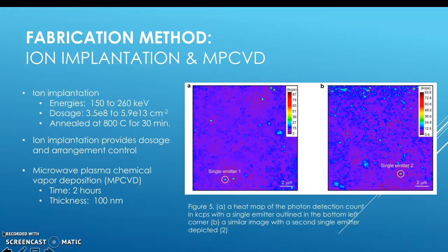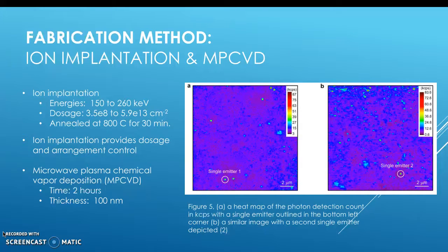Starting with the Iwasaki paper, we have the first two fabrication methods: ion implantation and MPCVD. Ion implantation provides dosage control as well as arrangement control, and has been used in other vacancy centers such as silicon vacancies to make pre-arranged sections. The issue with ion implantation is the stress imposed on the lattice from the bombardment of ions. To reduce the stress, you must anneal the sample at around 800°C for a prolonged period of time, around 30 minutes.